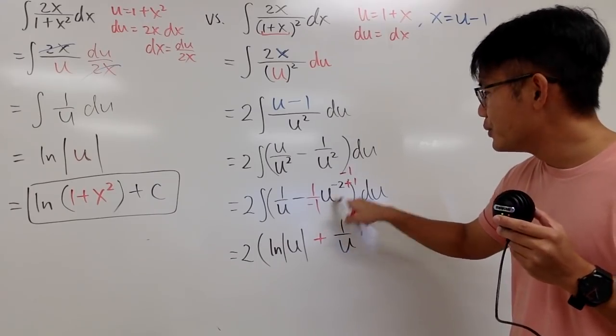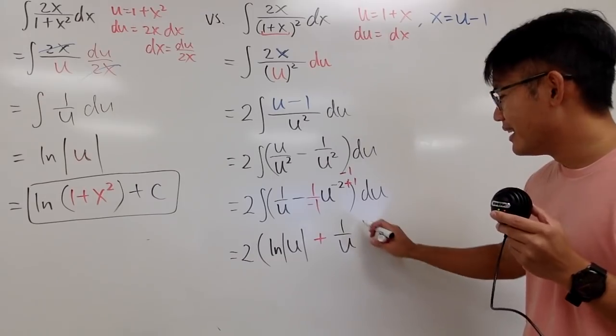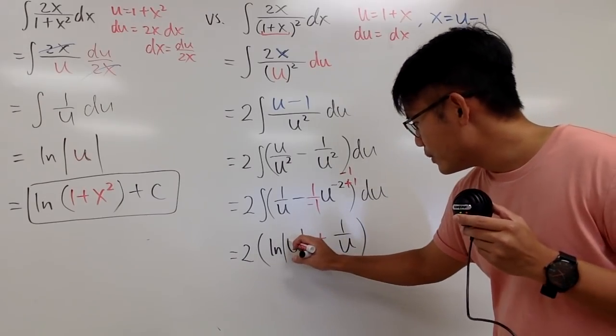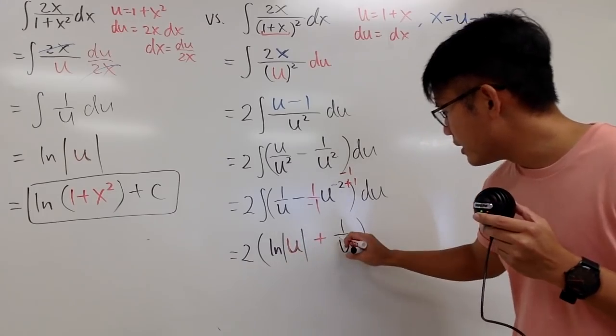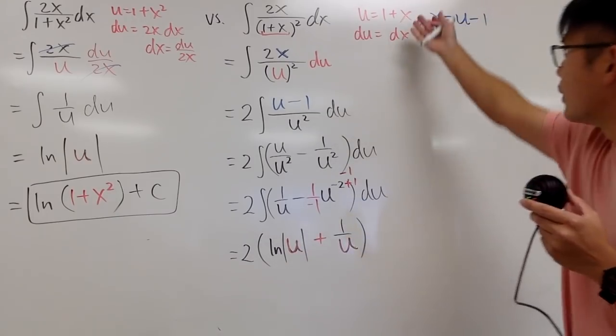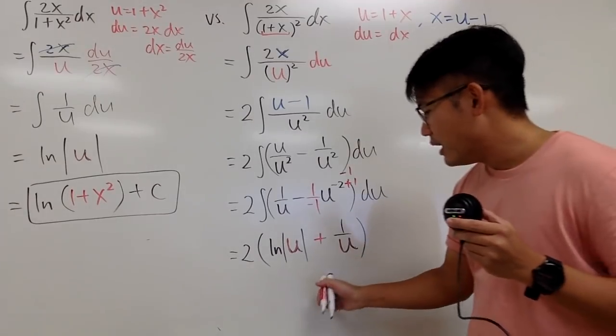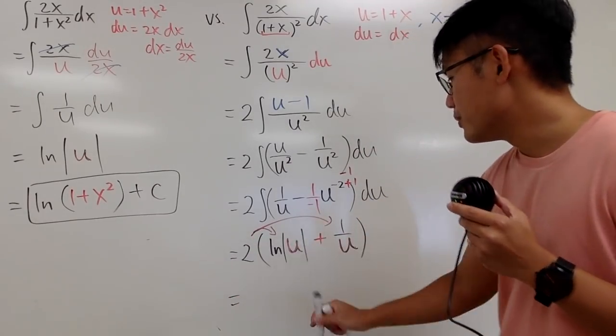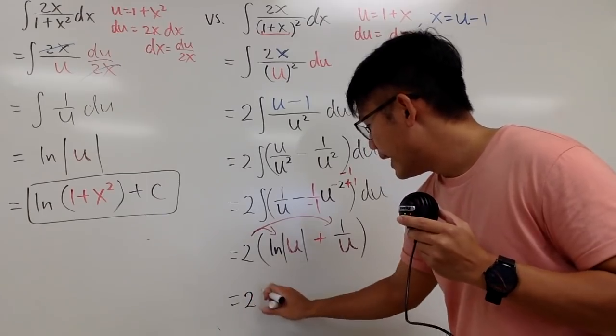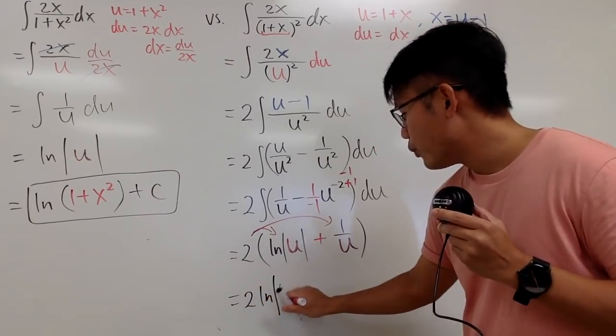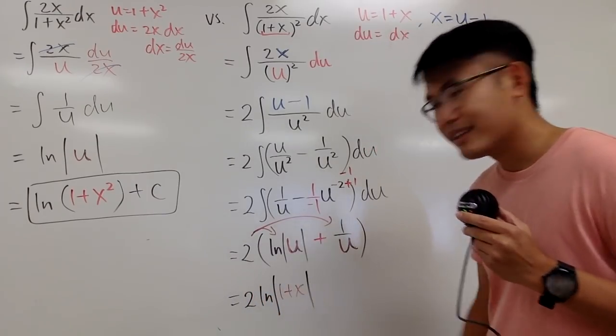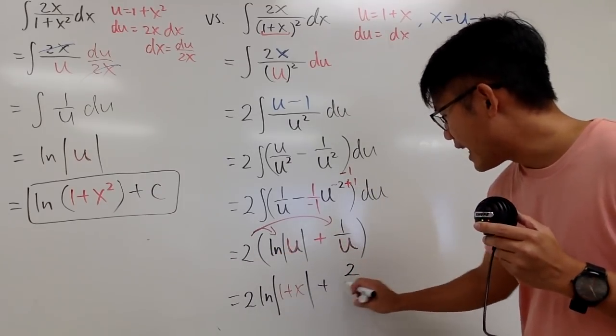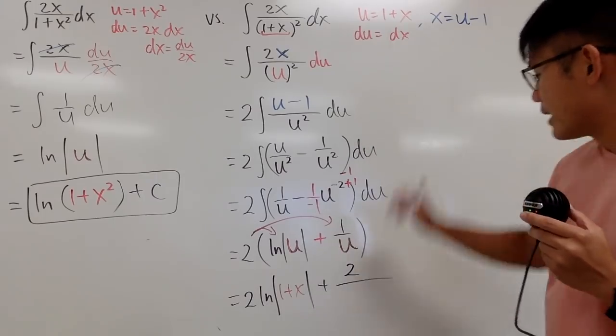And once again, this is because u to the negative 1 power. And then we are pretty much done. And finally, we just have to replace the u with the 1 plus x. So we can get back to the x world. And in the meantime, let me just distribute the 2. So we have 2 ln absolute value 1 plus x. And we add it with 2 on the top over the u is 1 plus x.